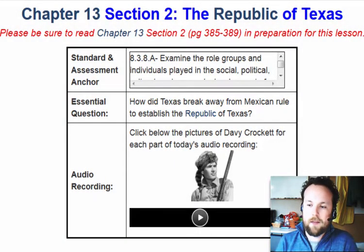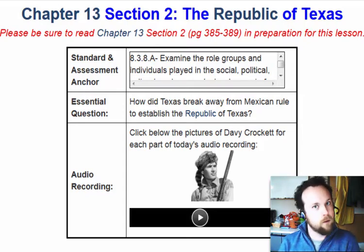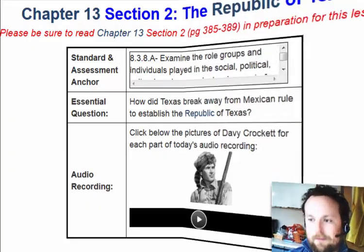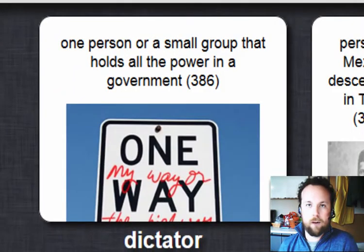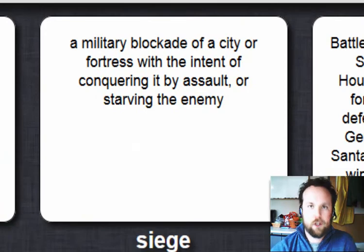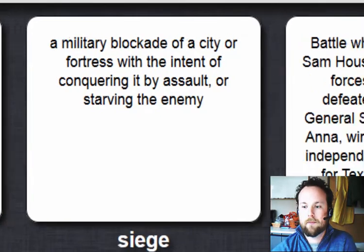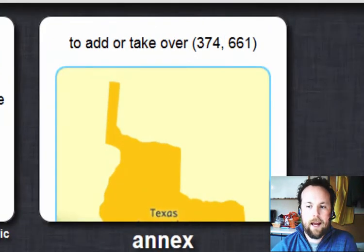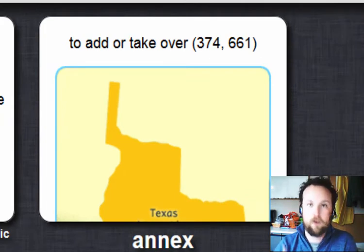I've done an audio recording, and today's picture is of Davy Crockett, because we will talk about Davy Crockett today. Let's move on to the key terms. Our key terms for today are: Dictator, Tejano, the Alamo, Siege (which is a military blockade), Battle of San Jacinto, the Lone Star Republic, and Annex — a verb meaning to take over or to add.